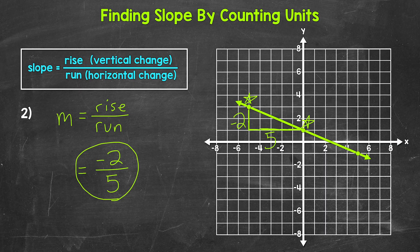The slope tells us that this line goes down two units for every five units it goes to the right. Just to check, using another pair of points: the vertical change is two units down, so negative two, and the horizontal change is five units, so run equals five — confirming the same slope.